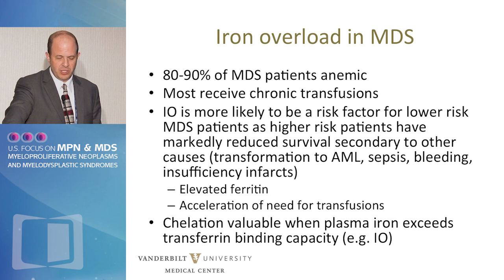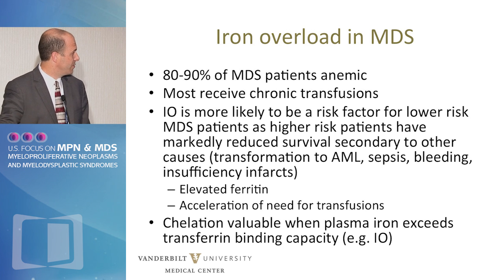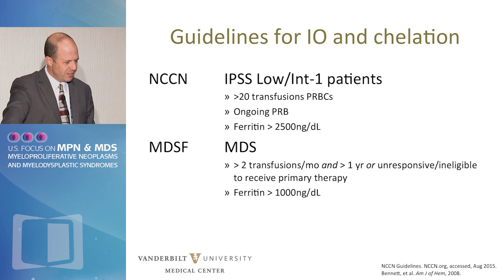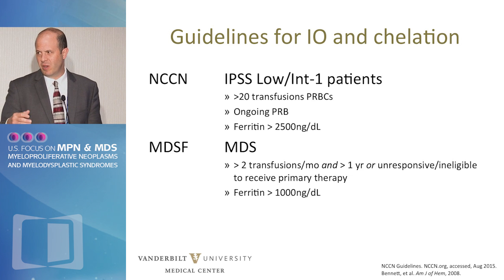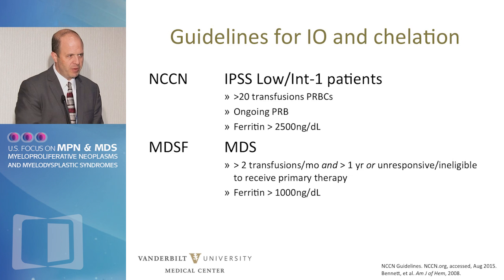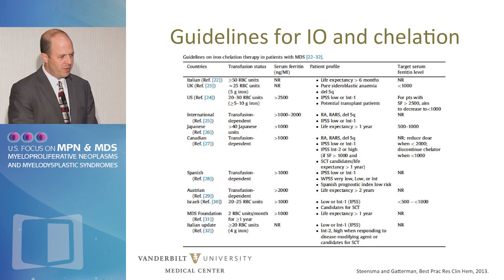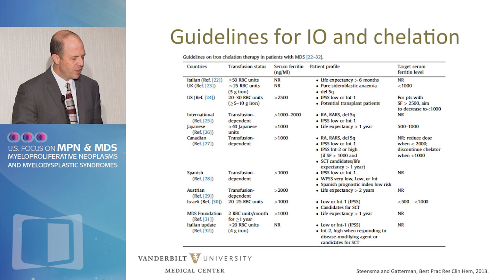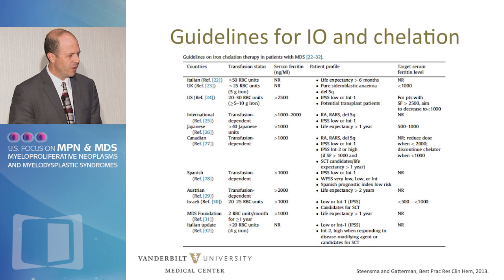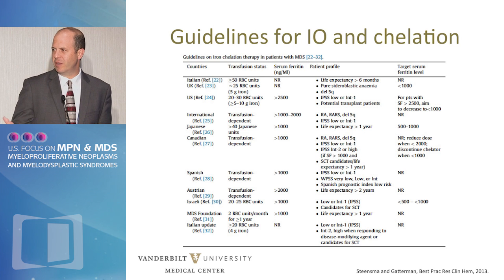The value of chelation is based on when plasma iron exceeds the transferrin binding capacity. The NCCN guidelines have recommended that patients who have more than 20 transfusions and ferritin greater than 2,500 should be chelated — which is fairly conservative. The MDS Foundation is a little more aggressive and recommends consideration of chelation for patients with ferritin over 1,000. All the different guidelines around the world concentrate on similar markers of iron overload — serum ferritin — similar patient profiles of lower-risk MDS, and many recommend target serum ferritin levels.